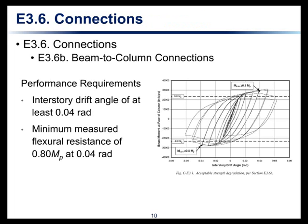If we look at Section E3.6 in the AISC seismic provisions — we haven't gotten to the pre-qualified connections yet — there are a lot of requirements in there, but what I think of as the main requirement comes down to a performance requirement on the beam-to-column connections. These must be able to sustain an interstory drift angle of at least 0.04 radians. And at that 0.04 radians, the flexural resistance must remain 80 percent of the plastic moment strength of the beam. So you have to maintain the interstory drift and maintain a certain strength at that drift — those are important performance targets that need to be met.